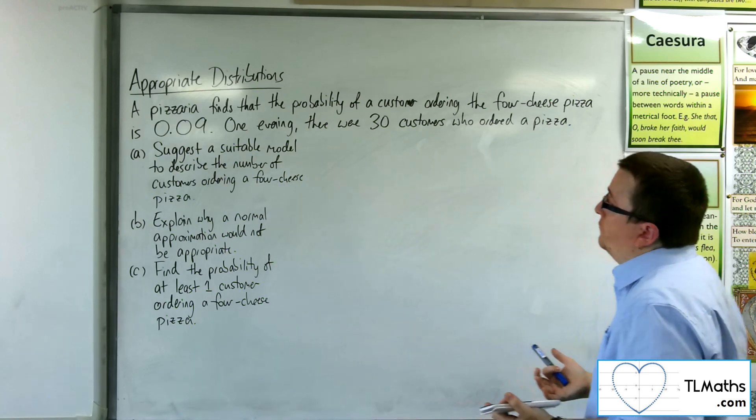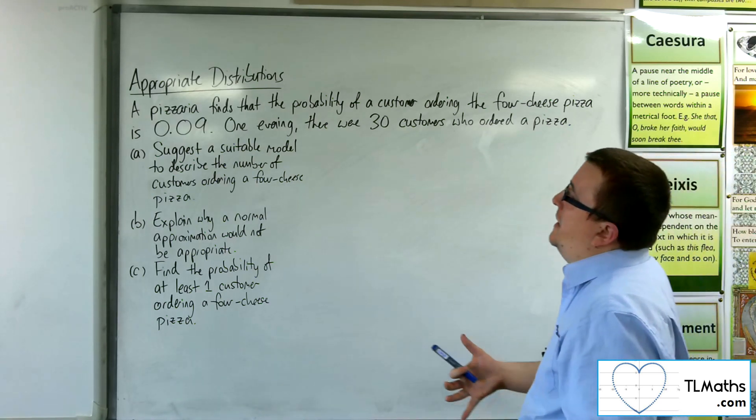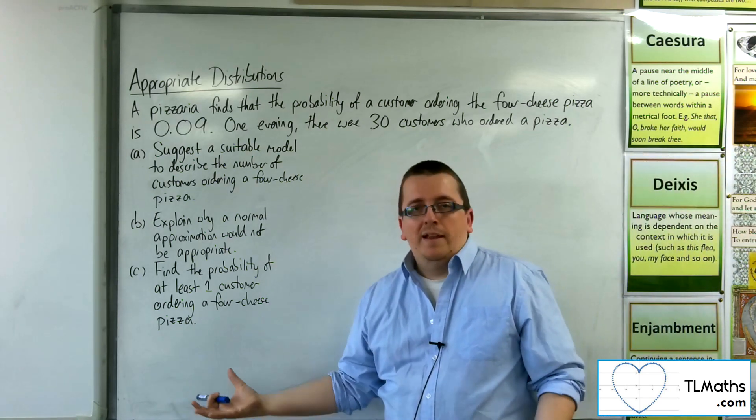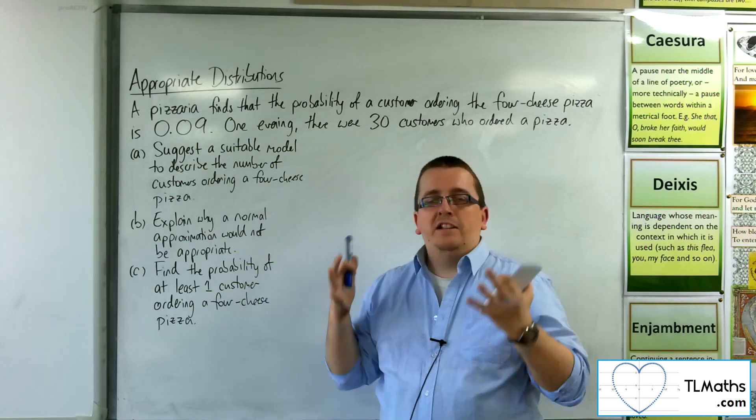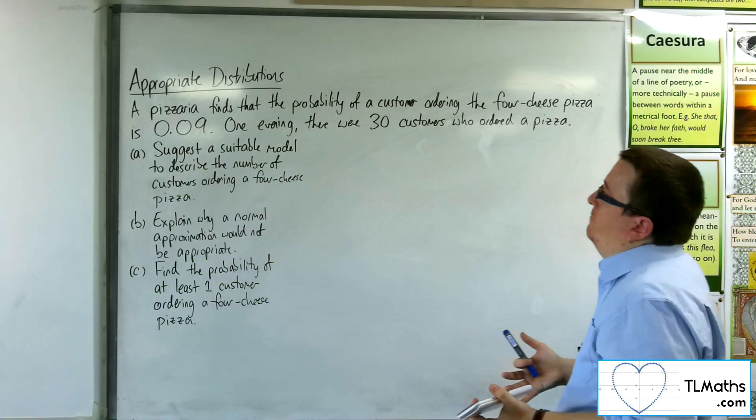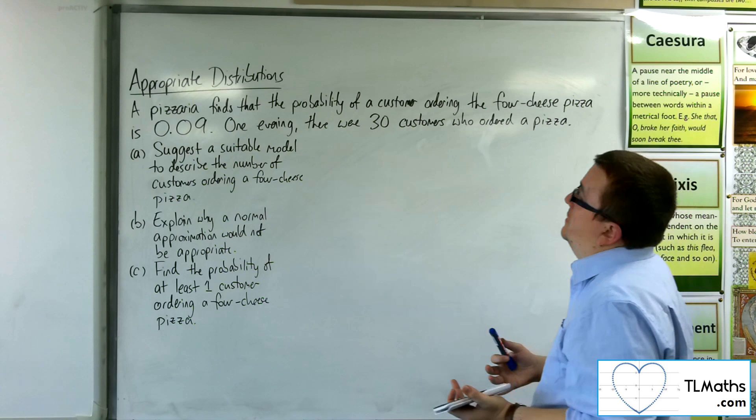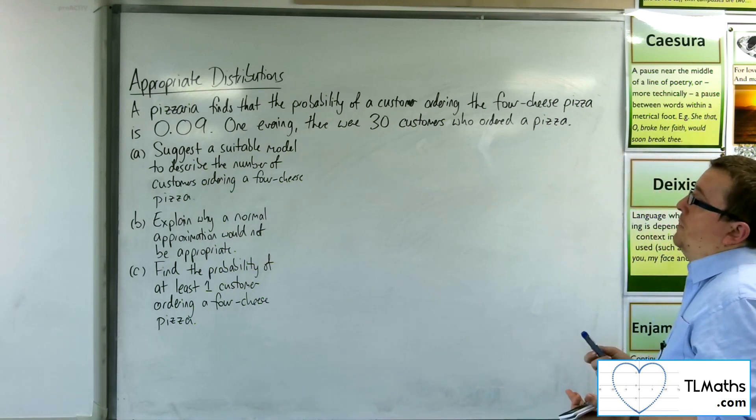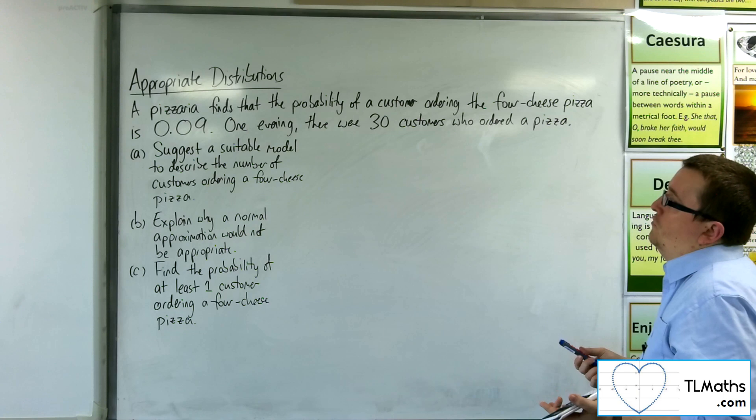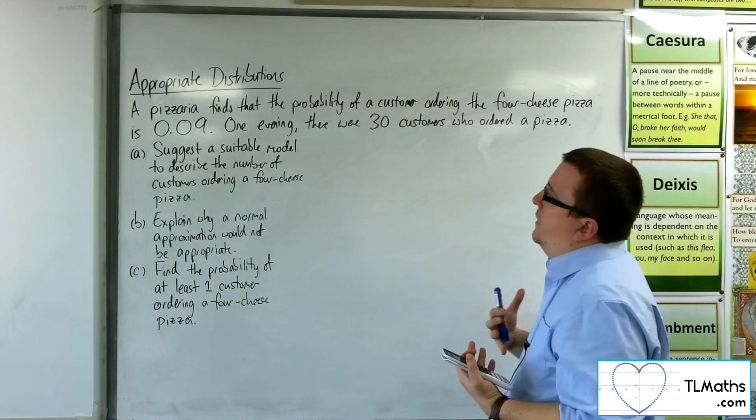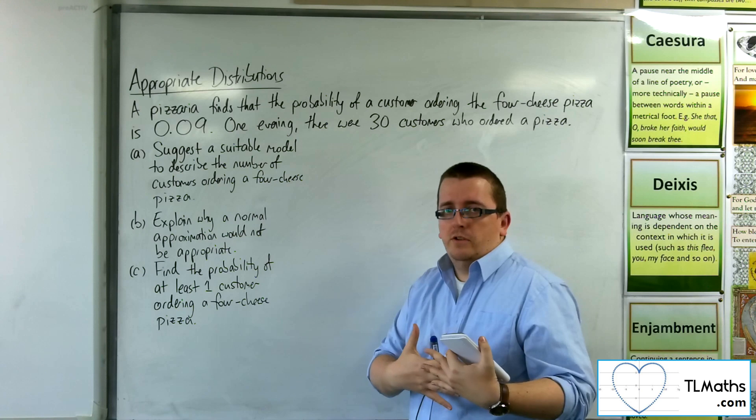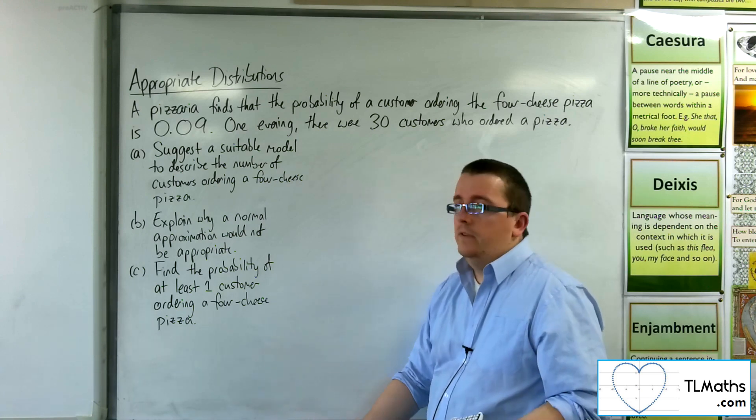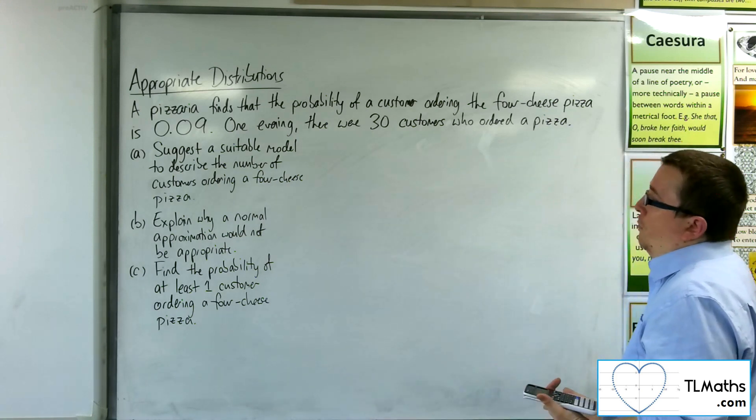The fact that you've been given an n and a p is screaming out it's a binomial distribution. It also makes sense that you could model it using a binomial distribution because either a customer ordered a four-cheese pizza or they didn't. So you've got those two options.